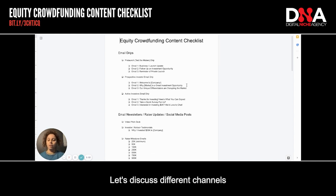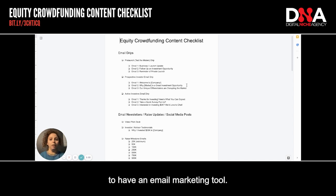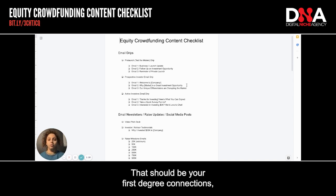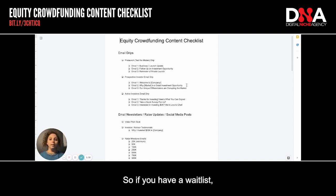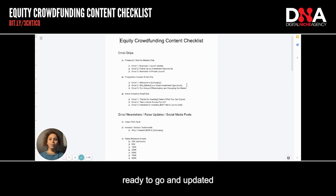Let's discuss the different channels you need to be on for this checklist. First, you need to be on email, which means you need to have an email marketing tool. That email marketing tool needs to be updated with all your contacts — your first degree connections, your friends, family and colleagues, and any other contacts you might have in your business, such as a waitlist or newsletter subscribers. You need to have your email marketing system ready to go.